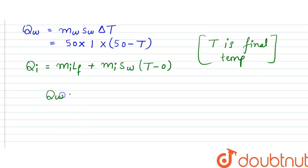So when we equate this, Qw should be equal to Qi. Therefore what we could say is that 50 into 50, so that is 2500, 2500 minus 50T would be equal to mi·Lf, that is 50 into 80.